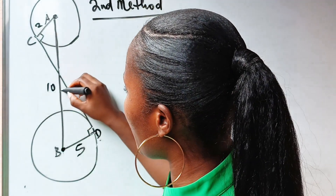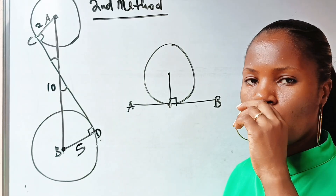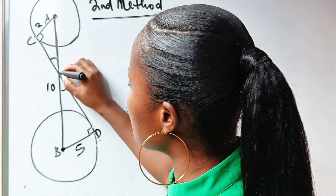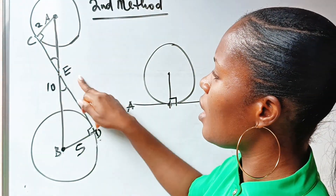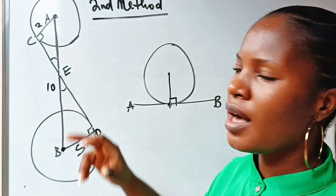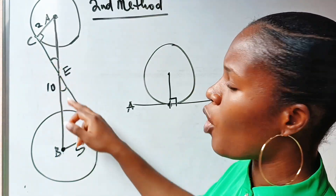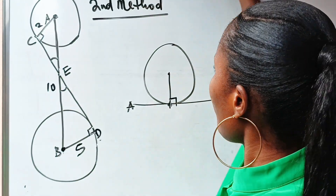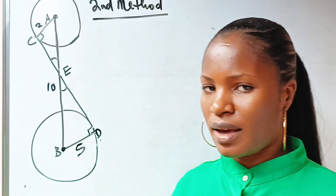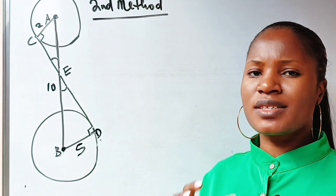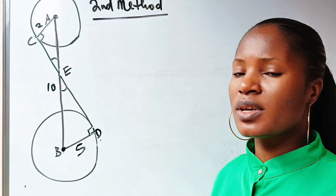Now we have an angle here and another angle here that are vertically opposite, which means the two angles are equal. If we call the intersection point E, then triangles ACE and BDE are similar triangles — they are similar because they each have 90 degrees and they share a common angle. Since they are similar, remember that the ratio of their corresponding sides are equal.